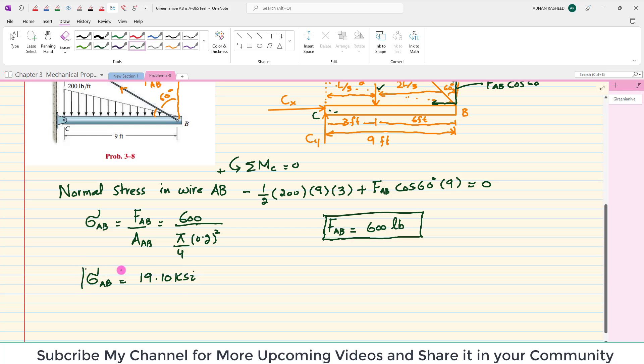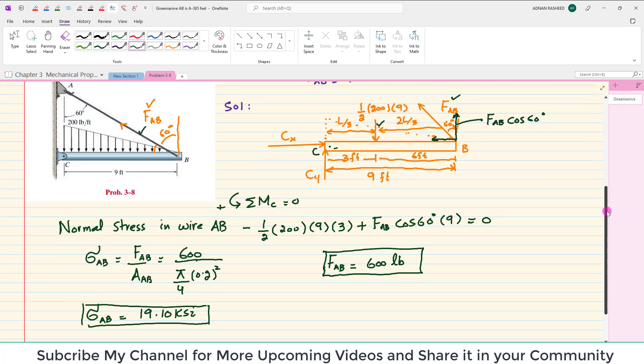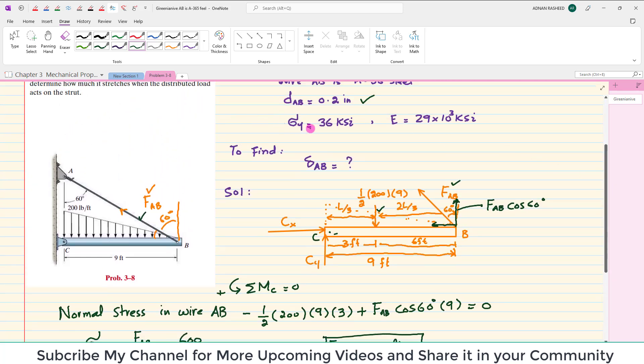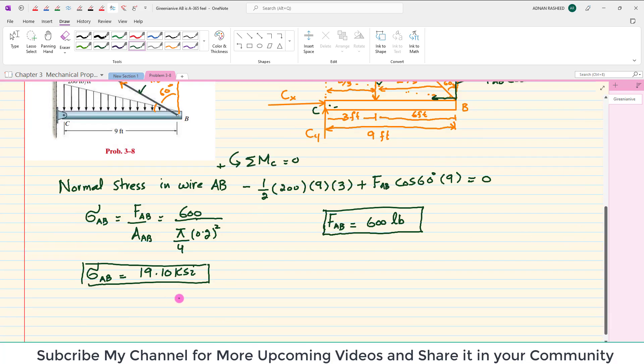You can see this is the stress generated in wire AB and the wire AB has yield stress of 36 KSI. It means that your stress AB is less than sigma yield, which means this stress is in elastic region.